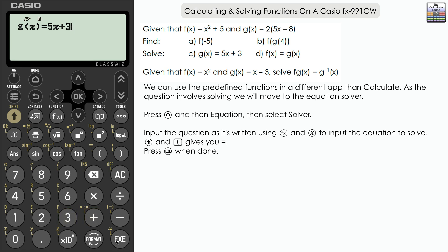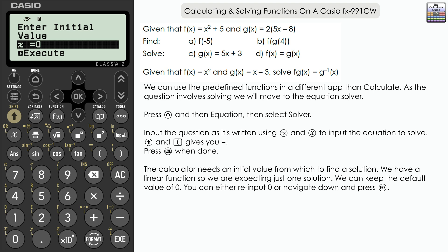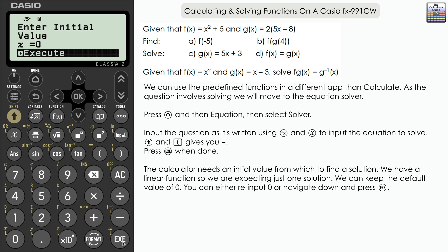The calculator needs an initial value from which to solve the equation. Part C is a linear equation, so there's only one solution — but the starting value matters when there are multiple solutions. It finds the closest solution to the initial value you input. Zero is always a good starting value. Navigate down to Execute and press it. The solution is x equals 3.8, which is correct for Part C.